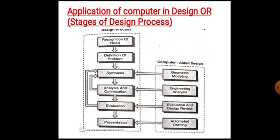Geometric modeling is defined as the complete representation of an object with graphical and non-graphical information. A geometric model generates a mathematical description of the geometry and non-geometry of an object in the computer database and displays an image of the object on the graphic screen. In synthesis, it is required to modify or alter the object many times until the desired result is obtained. Since the geometric model is stored in the computer database, it can be easily modified any number of times.